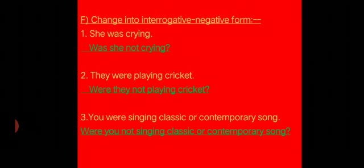In part F, you have to change into interrogative negative form. She was crying. Was she not crying? They were playing cricket. Were they not playing cricket? You were singing classical or contemporary song. Were you not singing classic or contemporary song?